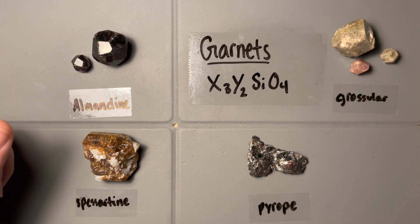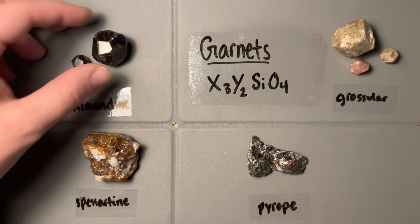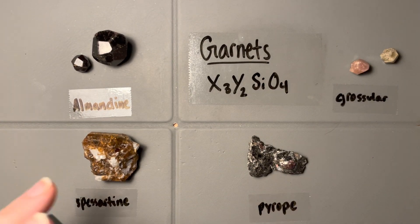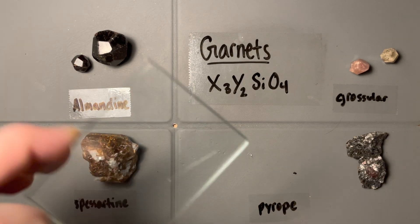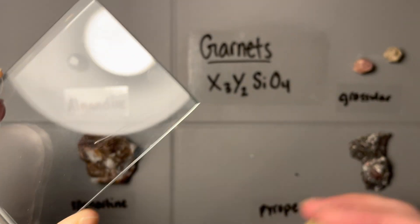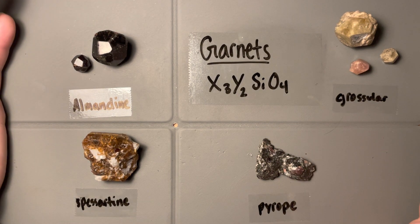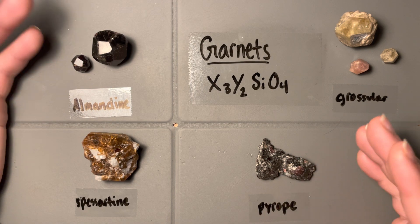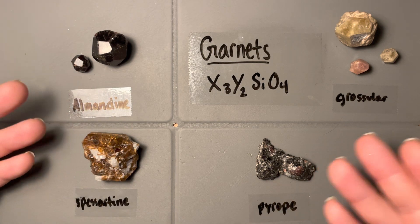Euhedral crystals — check. Vitreous luster — great, all of them have a vitreous luster. They're all pretty hard, about a 7, ranging from 6.5 to 7.5, but they should all easily scratch glass. Let's do that now — moving the pyrope out of the way — and there we go, easily scratched glass. That's the scratch I just made with the grossular. Now there are some subtle differences because of substitutions with iron, manganese, and magnesium — some are a little harder or softer, a little more dense.